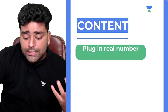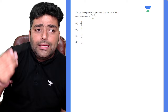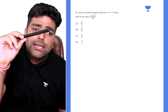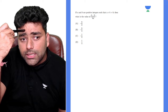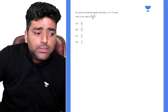The first technique is plug-in real numbers. If I give you the question: a and b are positive integers such that a plus b equals nine — what is the value of (b minus 9) divided by 4a? We know a plus b is nine, but we don't know the individual values of a and b, so how can we find the expression?